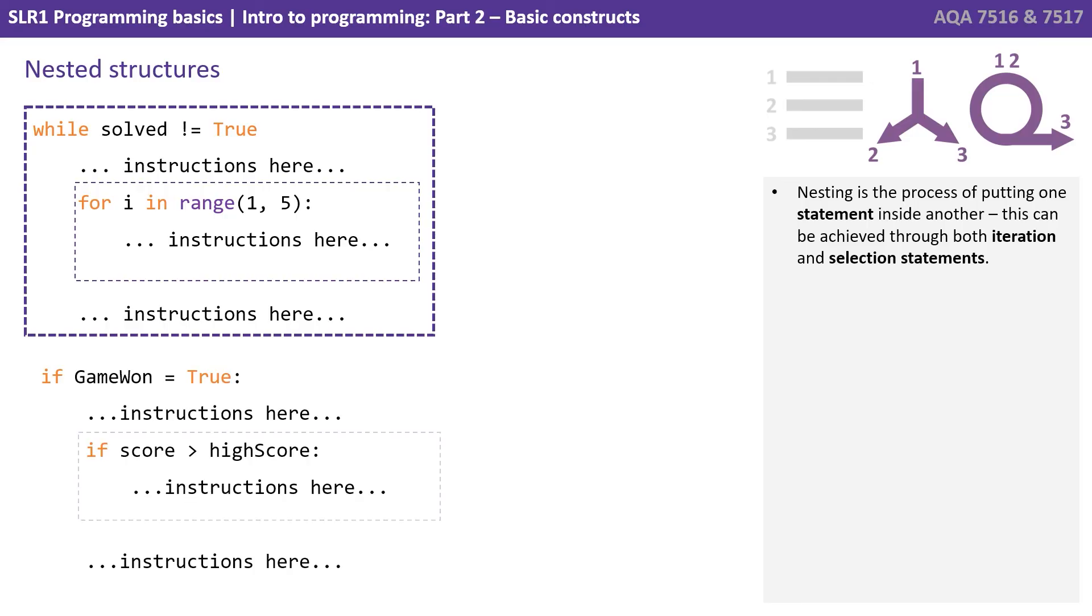Here we have an if statement nested within an if statement. If game one equals true, we enter the outer if statement, and within there we then say if score is greater than high score. So an if nested within an if.